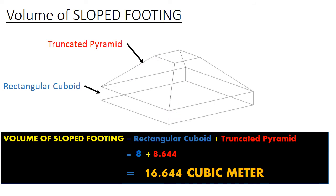Now we have the volume of the rectangular cuboid and the truncated pyramid. By adding these 2 volumes we can get the total volume of sloped footing. Volume of rectangular cuboid is 8 cubic metres and volume of truncated pyramid is 29.098 cubic metres. By adding these 2 volumes, the final volume of sloped footing is 37.098 cubic metres. That's how you can find the volume of any type of sloped footing.